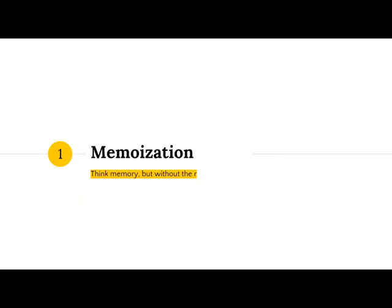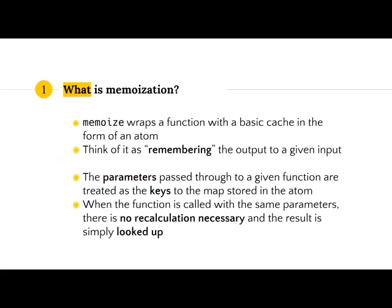When I first heard of memoization, the way I thought about it was: it's just like memorization, but you take away the R. So what is memoization? In Clojure, memoize wraps a function and gives it a very simple cache. Whenever you pass parameters to that function that are the same as ones you've done before, it won't reevaluate things — it'll just return the output. You can think of it as: memoize helps you remember the output to a given input.